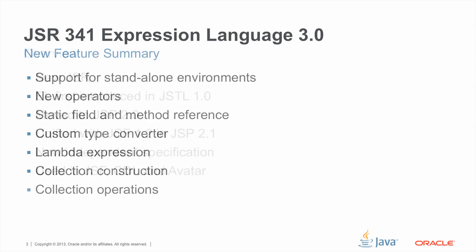In this talk, I am going to cover some of the more important new features in EL 3.0. This includes support for standalone environments. I will describe some of the new operators and show how static fields and methods could be used. I will also show an example of how a user could customize a particular type conversion, and describe lambda expressions and support for collection objects, including the construction of collections and the operations that one could do on them.